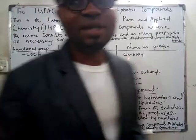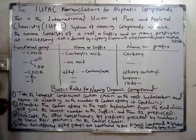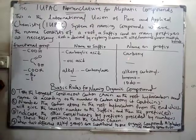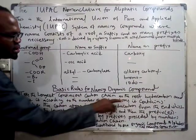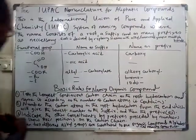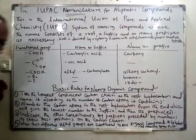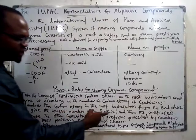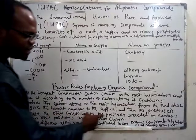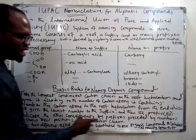Basic rules of naming organic compounds. Number one: take the longest continuous carbon chain as the root hydrocarbon and name it according to the number of carbon atoms it contains, adding the appropriate suffix and prefixes. Number two: number the carbon atoms in the root hydrocarbon from the end which will give the lowest number to the suffix and then the prefixes. Number three: indicate the other constituents by prefixes preceded by numbers to show their positions on the carbon chain.